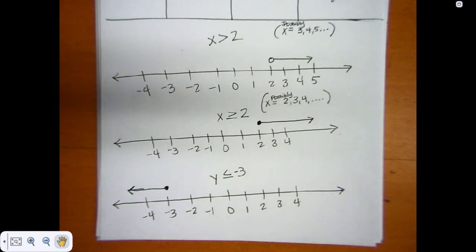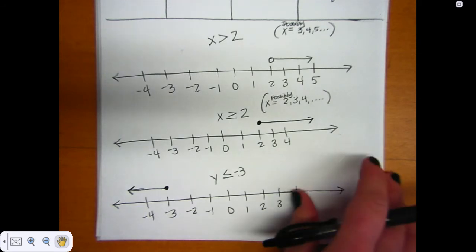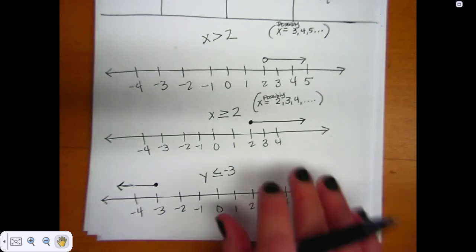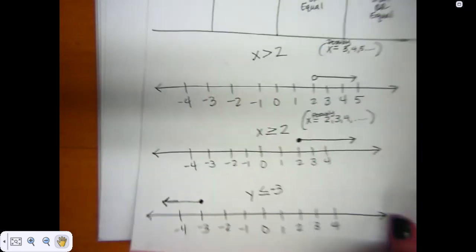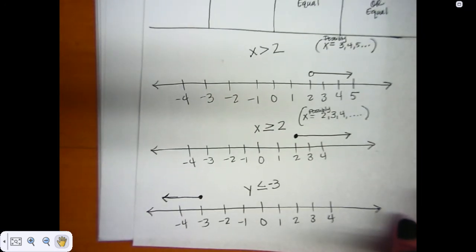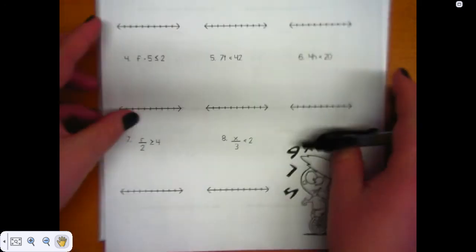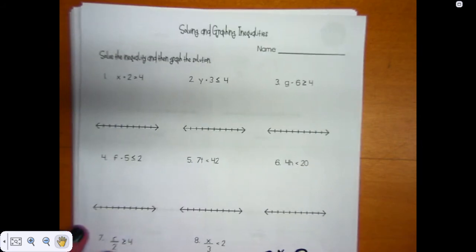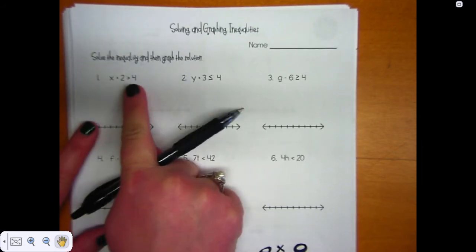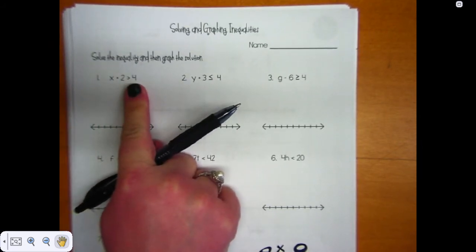So why does this come into play, other than because our standard says so? We've been solving equations, so if we can solve equations, we can solve inequalities. And our standard says we need to be able to graph them. So that's what we're going to do. Okay, so this looks familiar, except we've been seeing it with an equal sign.